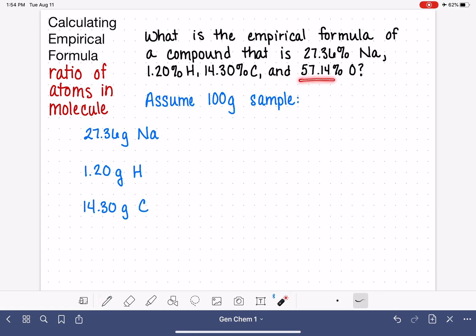And then also 57.14%, that means 57.14 grams of oxygen in a 100 gram sample. So what I have done here in this first step is just simply converted all of these percentages into masses, into grams.